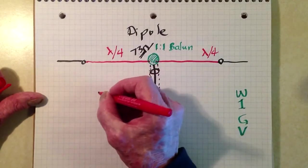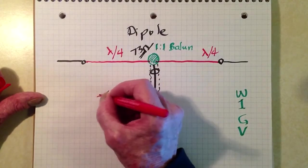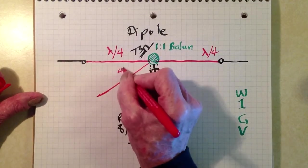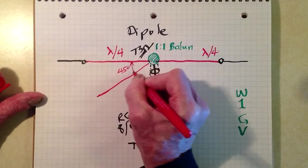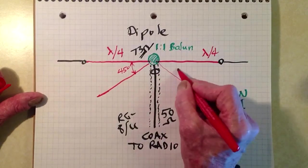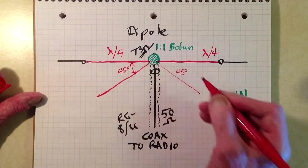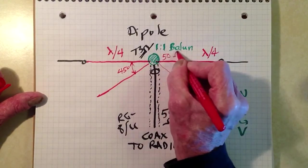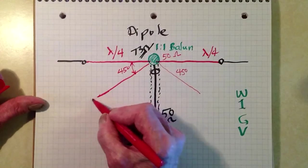However, you can droop these elements something on the order of 45 degrees with respect to the horizontal. Now I don't know exactly what the angle is that will give you 50 ohms at this feed point, but there does exist such an angle.